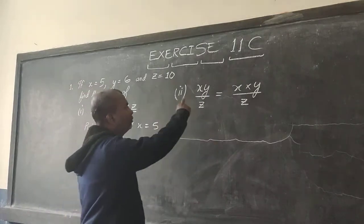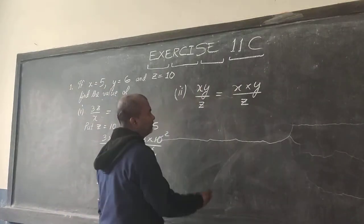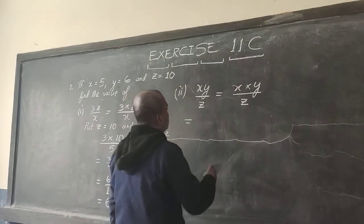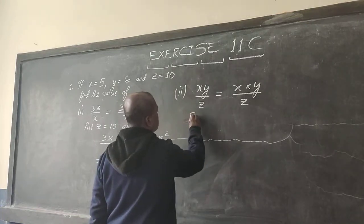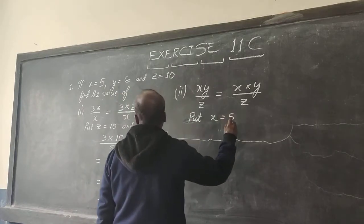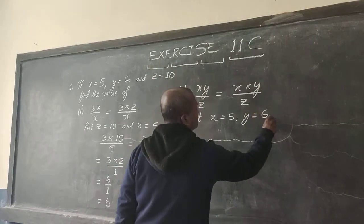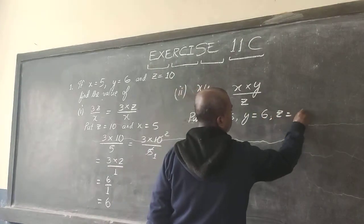Once again I am saying X, Y, there is no sign between X and Y because there is no multiplication sign. So now put what are the values of X. Again X is 5, Y is 6, Z is 10.